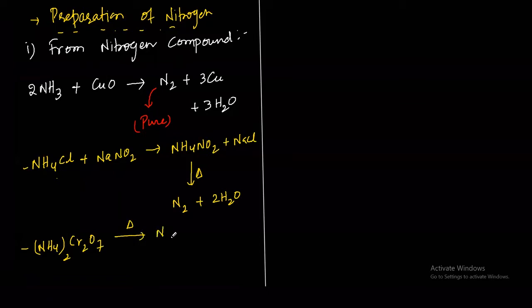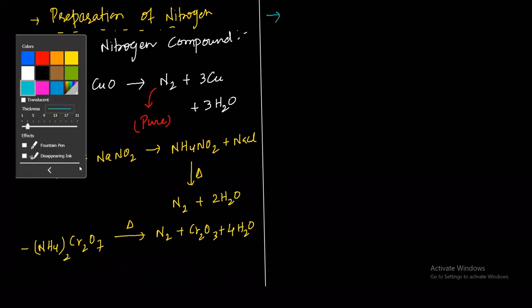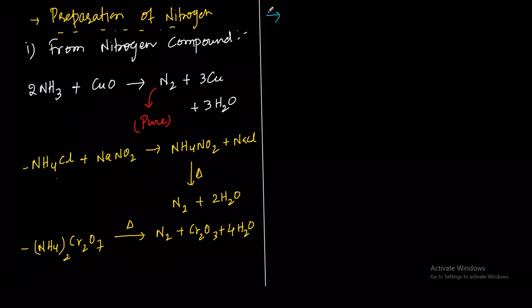Ammonium dichromate can also be heated to get nitrogen: (NH4)2Cr2O7 heated gives N2 plus Cr2O3 plus H2O. You should memorize these reactions. Properties of nitrogen: it is a colorless, tasteless, and odorless gas.